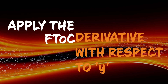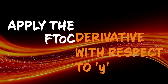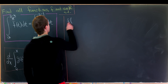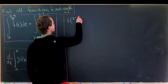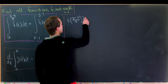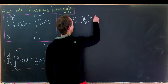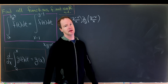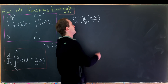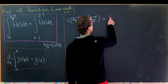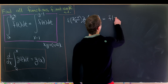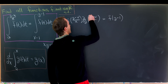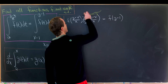We'll apply the Fundamental Theorem of Calculus by taking the derivative of both sides with respect to y. Taking the derivative of the left-hand side with respect to y gives us f evaluated at (y minus x)/x, times the derivative with respect to y of (y minus x)/x — we have to use the chain rule there because it's a function of y. On the right side, we just get f evaluated at y minus 1.